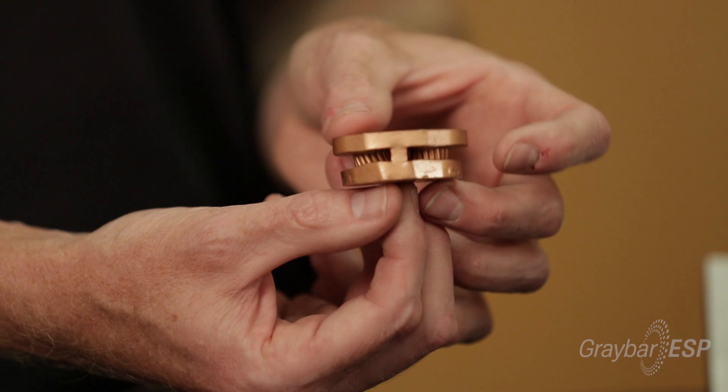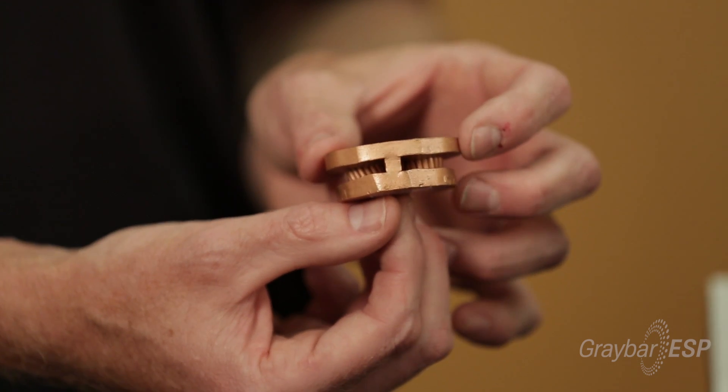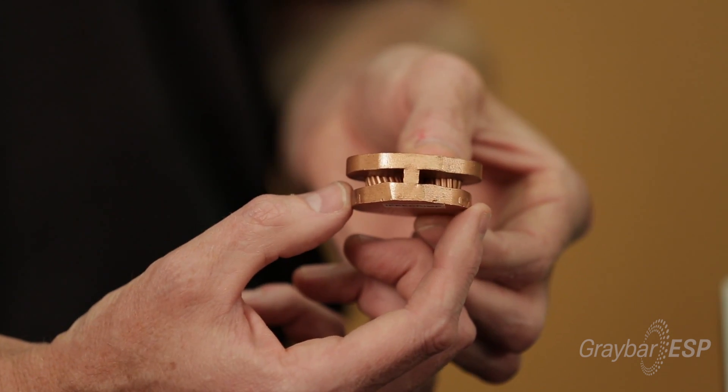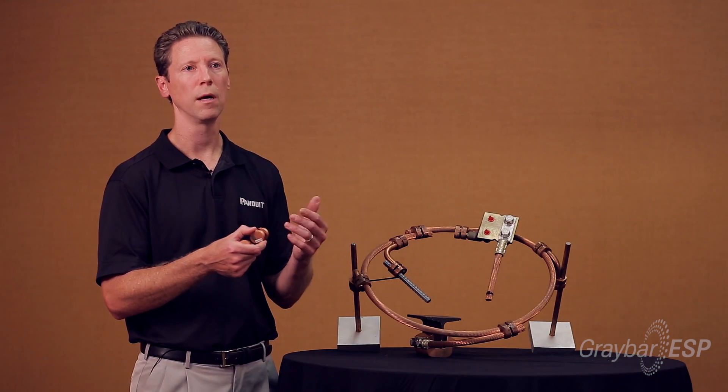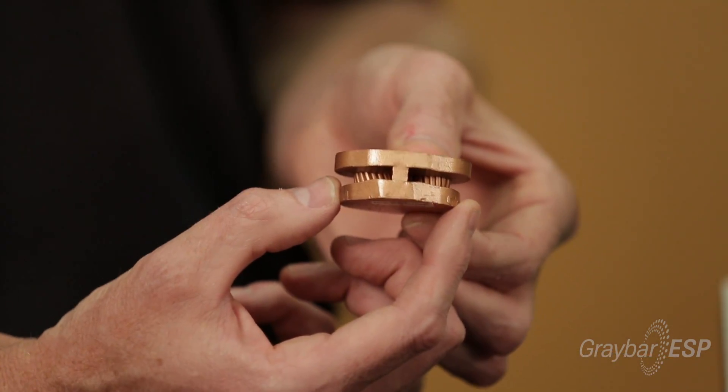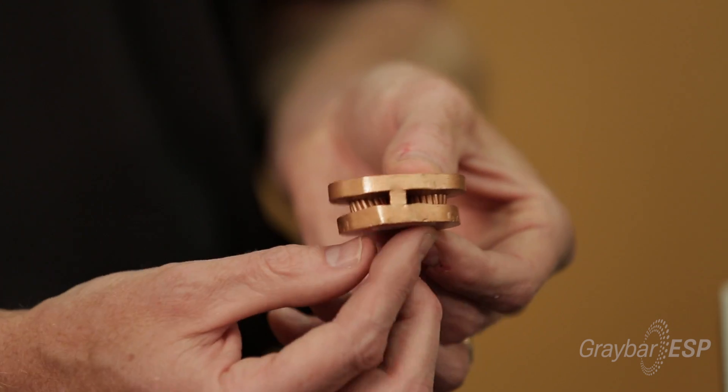The other way is the IEEE crimp. The top side here is the UL crimp and it doesn't get as compressed as much as the IEEE crimp. The IEEE crimp requires three crimps. It gets compressed much more because you're dealing with three sequences of crimping from the tool.